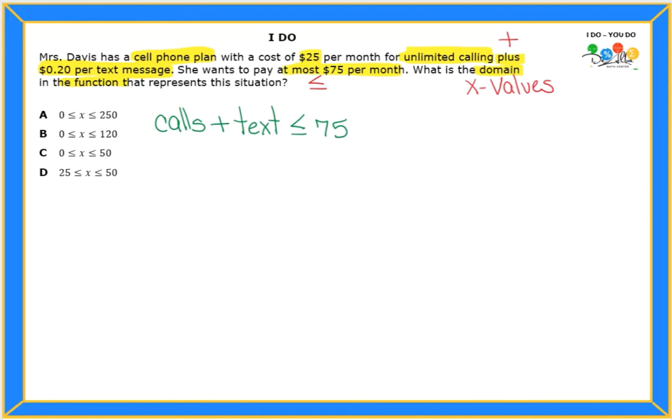So, let's see if we can replace some values here. What do I know about the calls? She pays $25 for that unlimited calls, and then she pays for texting. How much does she pay for each text? It says $0.20. So, we're going to write down 0.20t, where t is the number of texts that she's sending. And all of that needs to be less than or equals to $75. So, if you look at my problem here, now I know who's x. x is going to be my text messages.